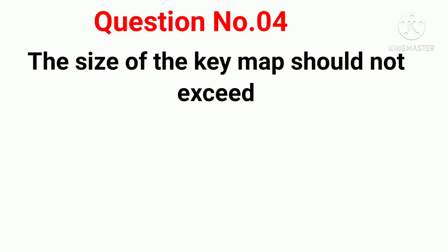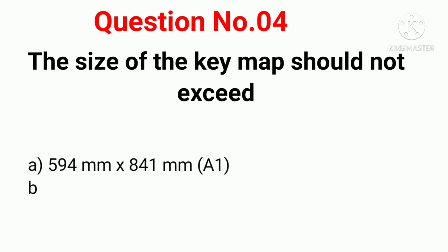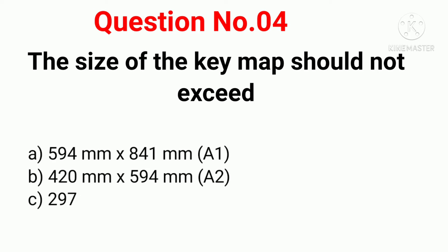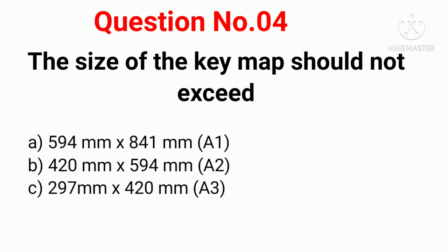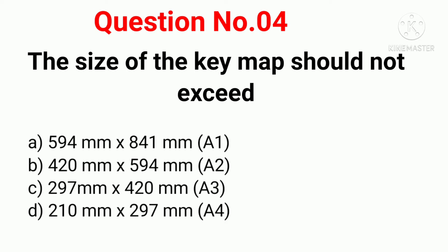Q4. The size of the key map should not exceed: Option A: 594 mm x 841 mm (A1). Option B: 420 mm x 594 mm (A2). Option C: 297 mm x 420 mm (A3). Option D: 210 mm x 297 mm (A4).